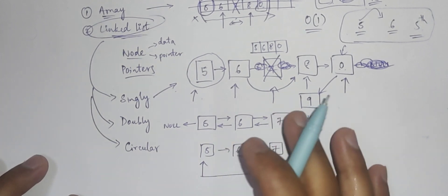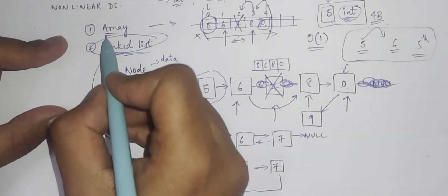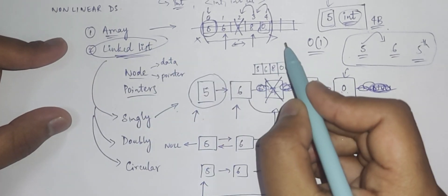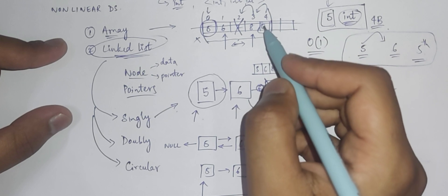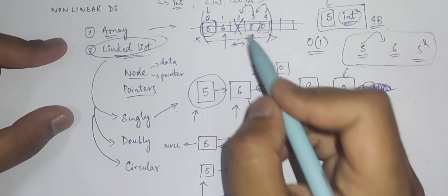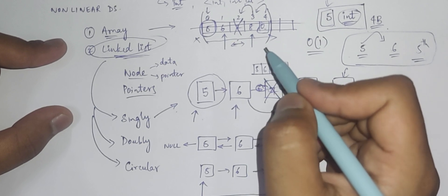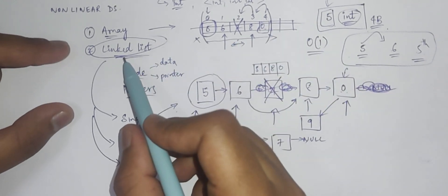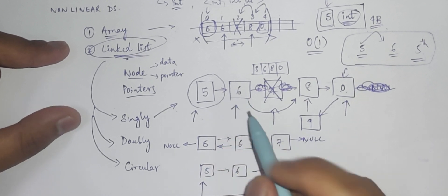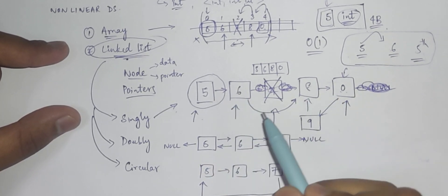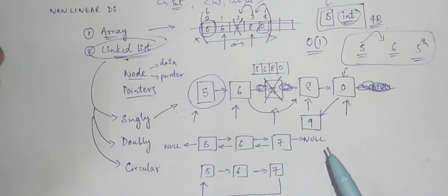So that was the basics of arrays and linked lists. To recap: arrays allocate a contiguous block of memory, and insertion and deletion are time-consuming tasks, but accessing any element is very easy and can be done in constant time. With linked lists, insertion and deletion are very easy, but accessing any element requires traversal all the way to that position, which is the drawback.